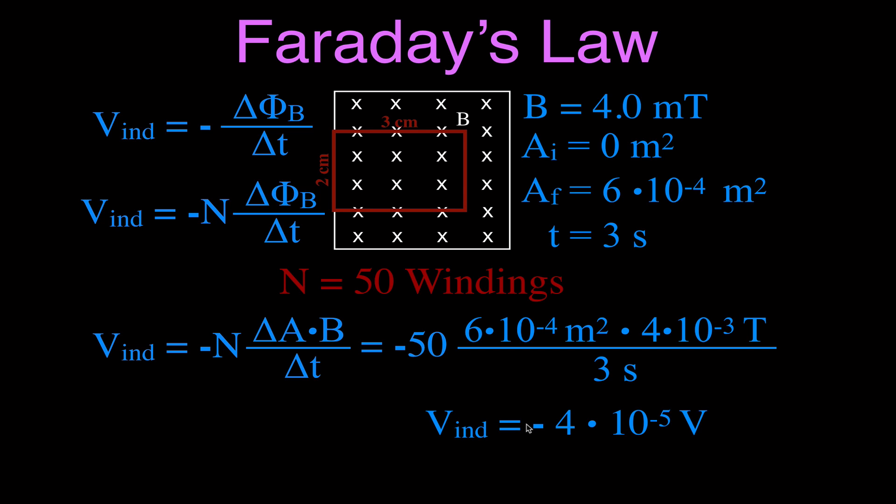So there we go. We talked about the equation, the factors that affect it — inverse and direct relationships — and then went through examples calculating the induced voltage for changing the magnetic field, changing the area, decreasing the time, and changing the number of windings. Thank you very much. I hope you found the video helpful.